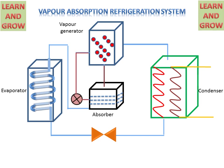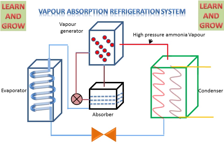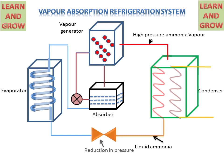Then these vapors will go to the condenser. High pressure ammonia vapor will reach the condenser, and in the condenser they will lose their latent heat and convert into liquid ammonia.